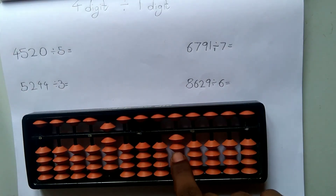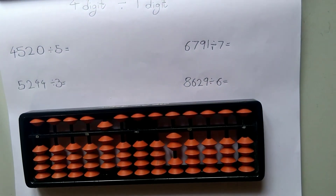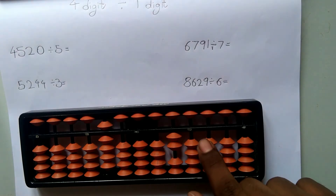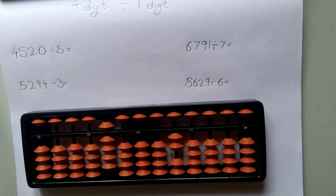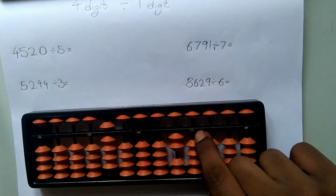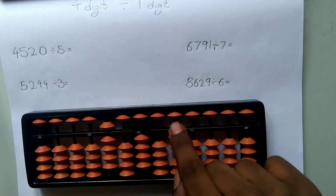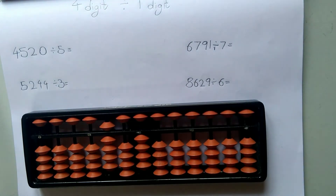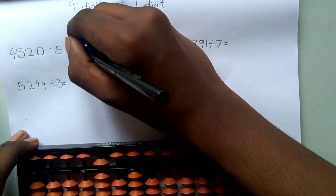Now let's go to the next rod: 2. 2 is less than 5, so we cannot use it. Let's include the 1s rod as well — it becomes 20, because there is nothing on the 1s rod, so it's 0, and 20. So 20 divided by 5 is 4. Since we included the 1s rod, the answer is represented on the 1s rod. 5 fours are 20, and we subtract 20. There is no remainder. So our answer, also called the quotient, is 904.